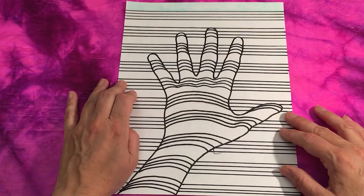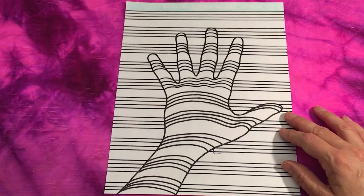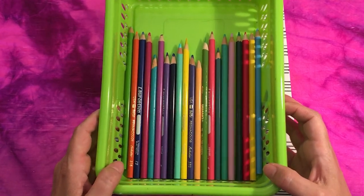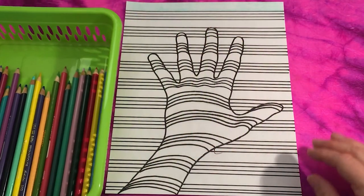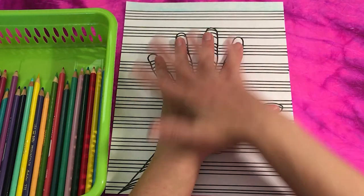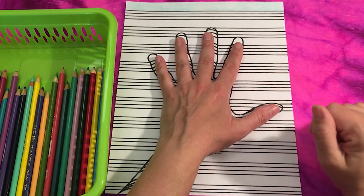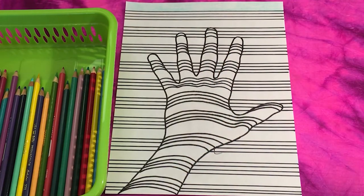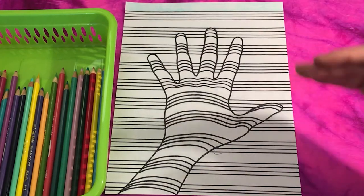And this next step is going to involve our pencil crayons, so you can get those out. And what I like to do for this step, because I want my hand to look like it's trapped underneath some gift wrap or some wallpaper, I'm going to be doing my colors in a pattern. So I'm only going to choose four colors and I'm going to repeat them in order.